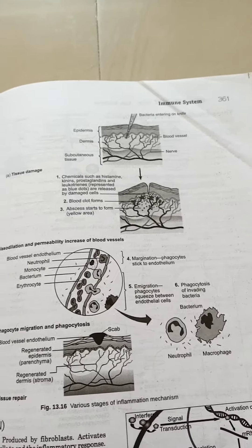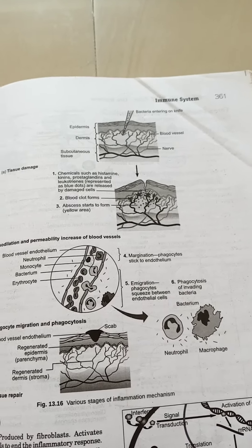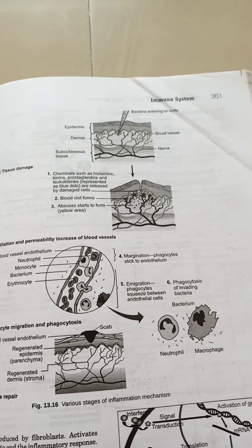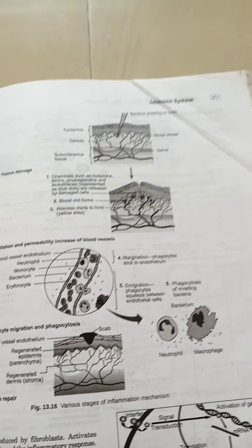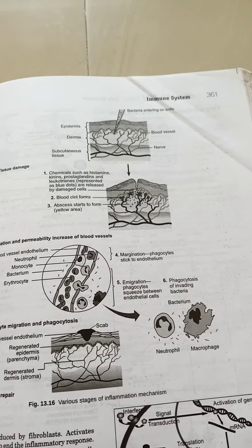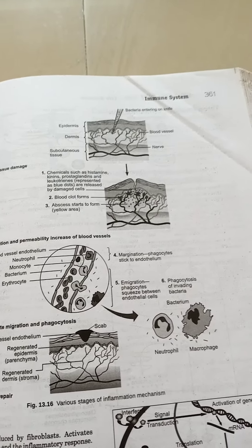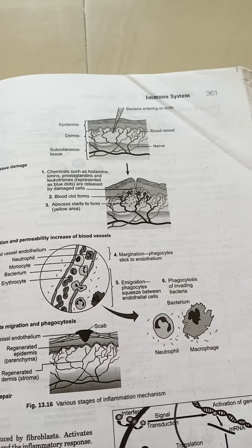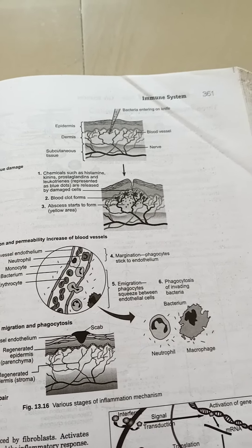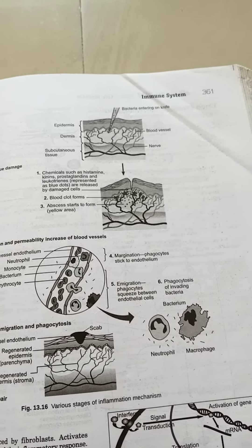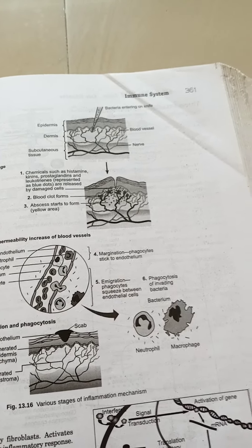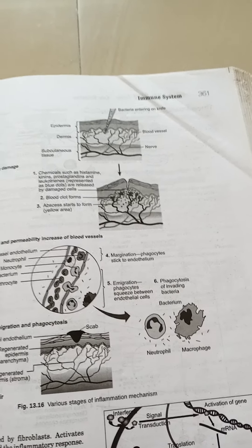Mast cells also produce heparin, which is an anticoagulant. Leukocytes produce leukotrienes, which have a squeezing effect on capillaries and cause bronchial constriction. Serotonin, released by platelets, causes vasodilation. Histamine released by basophils also causes vasodilation.